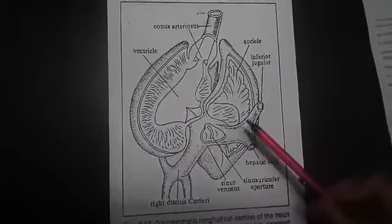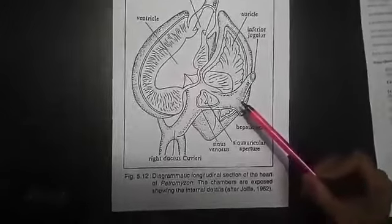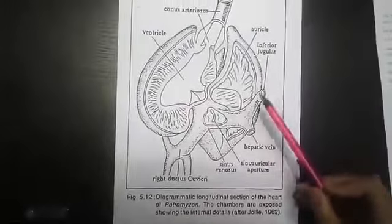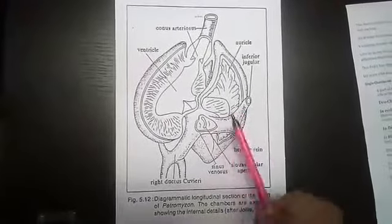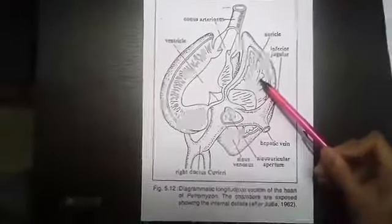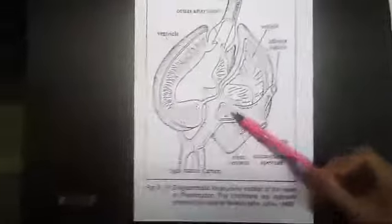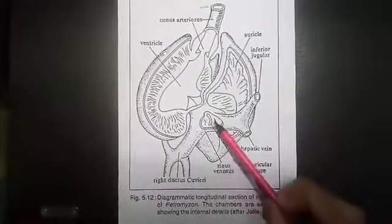This is heart of petromyzon, that is cyclostome. It is a longitudinal section showing different partitions or compartments of the heart. This is sinus venosus. It opens into auricle through a sino-auricular aperture which is guarded by a sino-auricular valve.